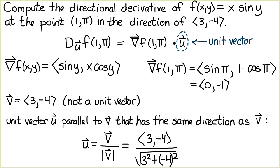over the square root of 3² + (-4)². And since the denominator simplifies to the square root of 25 or 5, we have ⟨3,-4⟩ divided by 5, which equals ⟨3/5, -4/5⟩.